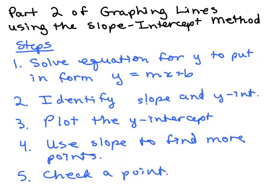We'll identify the slope, that'll be the m, and the y-intercept, that's the ordered pair (0, b). Then we will plot the y-intercept. Next, we'll use the slope to find more points. Then we'll check a point on the graph to make sure it works in the original equation.